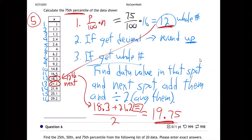So 19.75, that's the answer to my question. 19.75 is the 75th percentile. That means that data value is 75% of the way through the data.